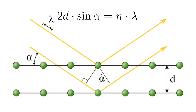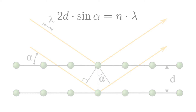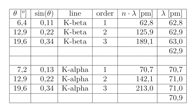We measure the reflection of the two lines at the following angles and wavelengths resulting from the Bragg condition. For the sodium chloride crystal with a lattice plane spacing of d equal to 282 picometers: at theta equal to 6.4 degrees, sinus theta is 0.11 — this is the k-beta line in the first order, giving n times lambda equal to 62.8 picometers, so lambda is 62.8 picometers. At theta equal to 12.9 degrees, sinus theta is 0.22 — the k-beta line in the second order gives n times lambda equal to 125.9 picometers, so lambda is 62.9 picometers.